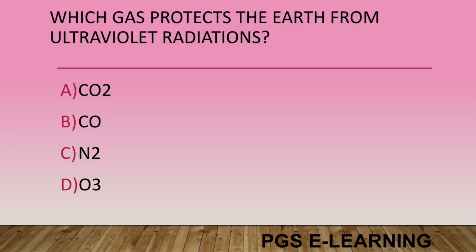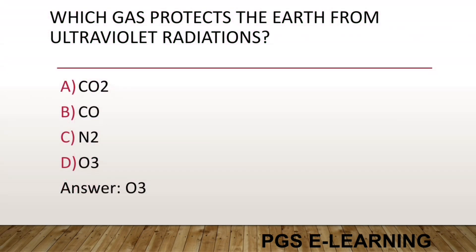Which gas protects the Earth from ultraviolet (UV) radiation? Option A, CO2. Option B, CO. Option C, N2. Option D, O3. Correct answer is O3.